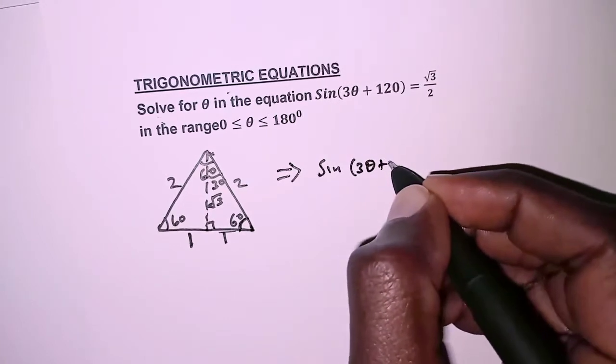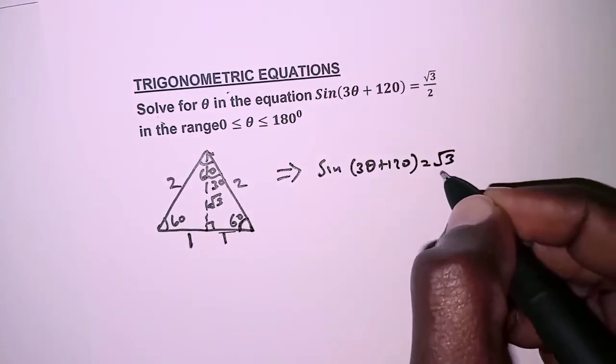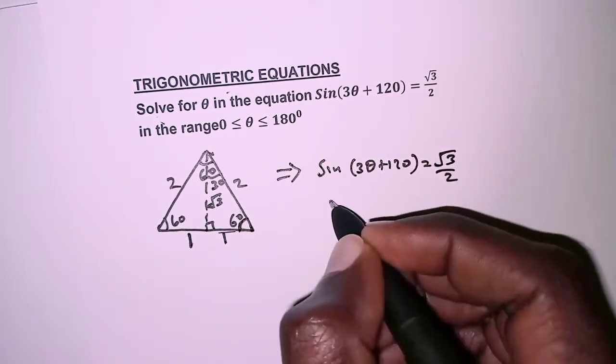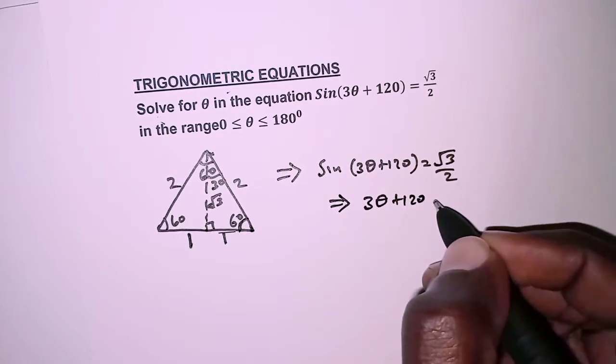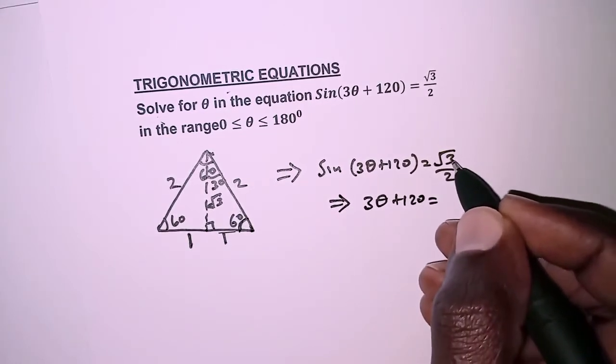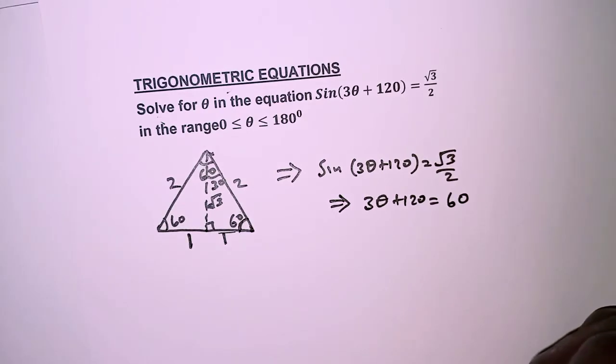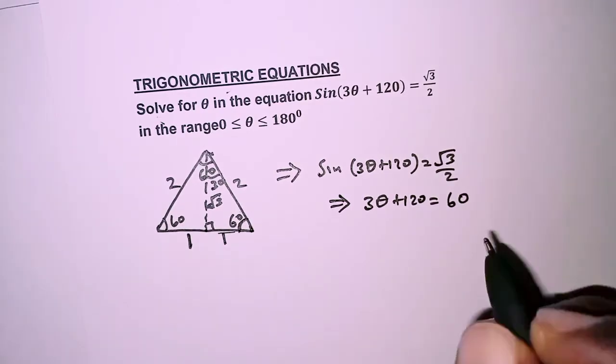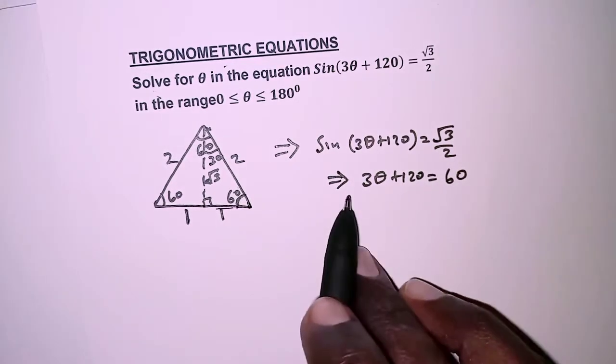This simply implies that sin(3θ + 120) = √3/2, which means 3θ + 120, the sine inverse of √3/2, is 60°. So the next thing is to interpret this on a unit circle.